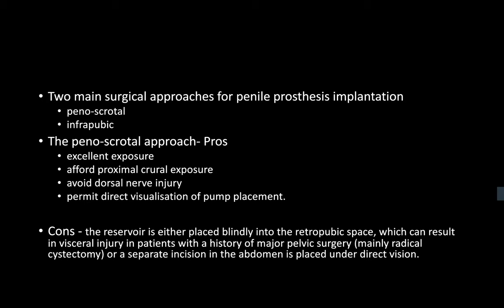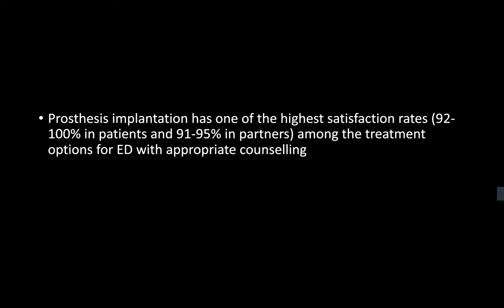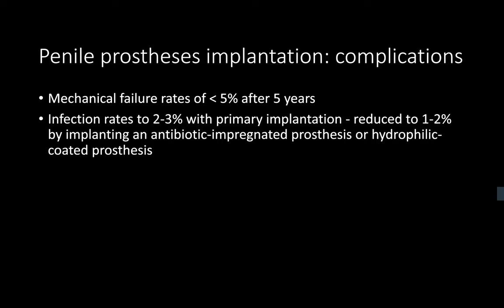What is the success rate of prosthesis implantation? In terms of overall satisfaction, the success rate is very high — 80 to 90%. In terms of complications, infection rates are approximately 5%. What are some complications of penile implantation? These include poor satisfaction, crossover during dilation, perforation of the tunica albuginea or the urethra, prosthesis erosion, and prosthesis infection.